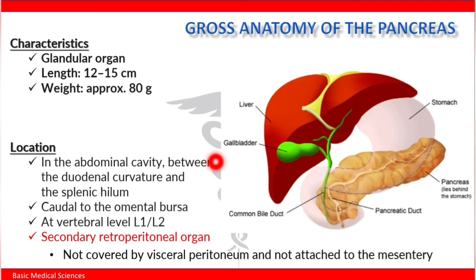The pancreas is localized in the abdominal cavity between the duodenal curvature and the splenic hilum. It is located caudal to the omental bursa, and skeletal topology is found at the level of L1 and L2. The pancreas is a secondary retroperitoneal organ.